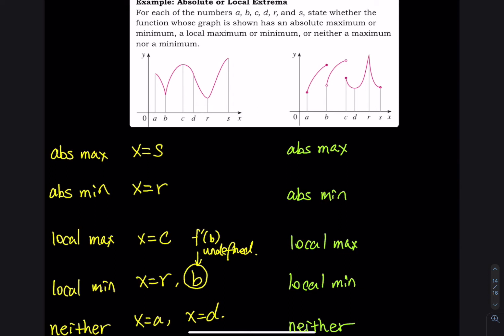Moving on to the picture on the right: the absolute maximum is the highest y value ever, which is at x equals r. The absolute minimum is at x equals a. The local max — top of the hill — is at x equals r. The local minimum — bottom of the hill — is at x equals d. The rest, x equals c, x equals s, and x equals b, are neither max nor min.